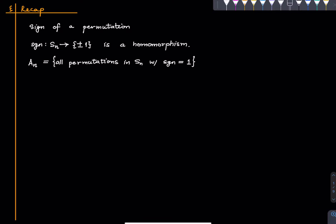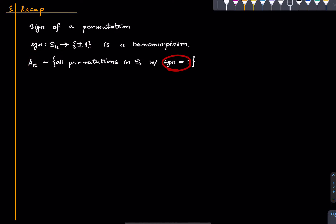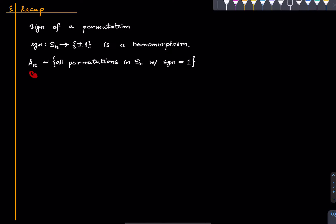We then saw that sign is a group homomorphism from Sn to this group, and we defined An as the set of all those permutations whose sign is equal to 1. In other words, this is the kernel of this map. We commented that this is a proper subgroup of Sn, meaning that the sign function is surjective, and in this lecture we will see that in detail. This is called the alternating group.